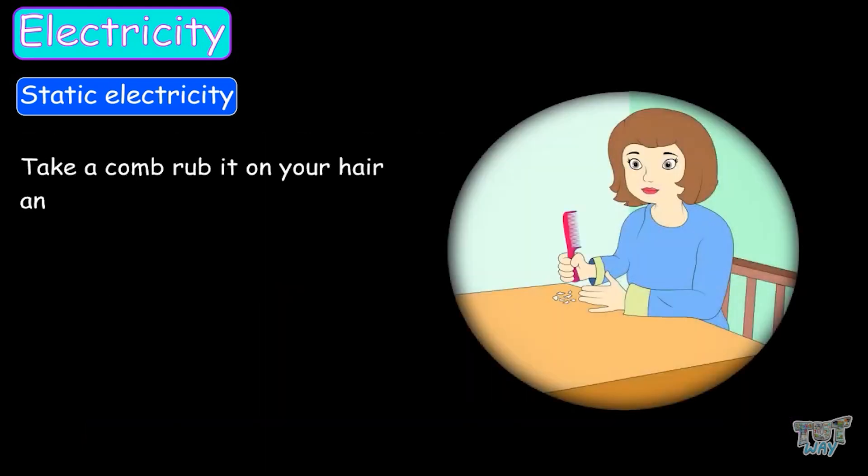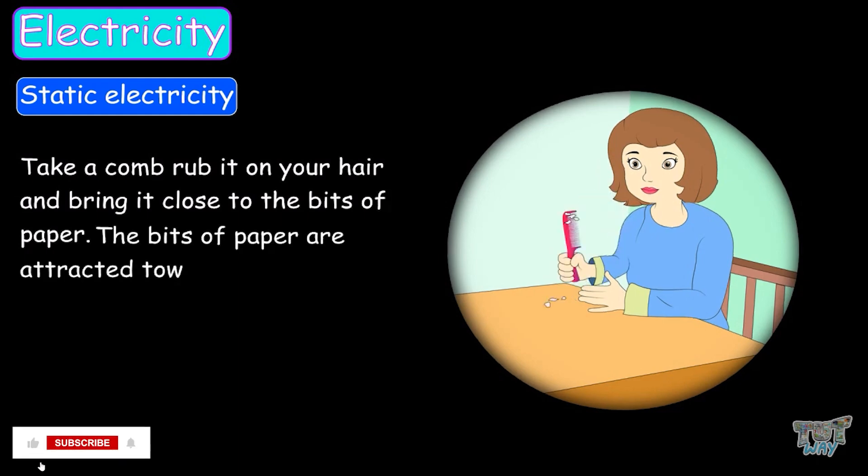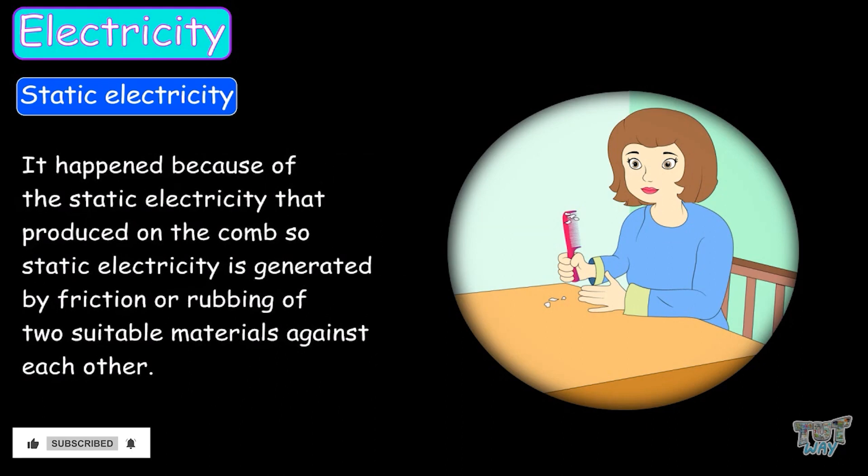Take a comb and rub it on your hair. Bring this close to pieces of paper. The bits of paper are attracted towards a comb. It happens because of static electricity that is produced on the comb. So static electricity is generated by friction, or rubbing, of two suitable materials against each other.